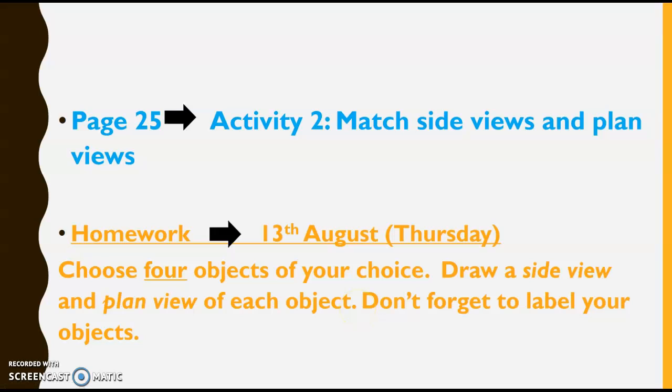And don't forget to label your objects. So if you choose a shoe, you will have a picture of the shoe from the side and you will label the shoe and say side view of my shoe or my mom's shoe or my brother's shoe. And then next to it you will have a plan view, and the plan view would be of the same object. If it's your shoe, you'll say plan view of my shoe. If it's your mom's shoe, you'll say plan view of my mom's shoe or my brother's shoe or my sister's shoe. It really doesn't matter whose shoe it belongs to, but please remember to label.